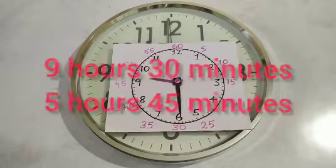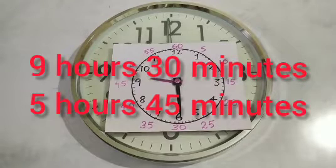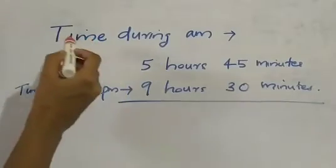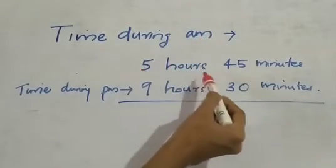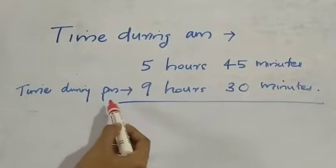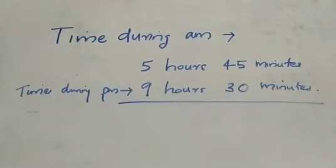So now 9 hours 30 minutes in the PM time, and 5 hours 45 minutes in the AM time. Now we want to calculate both. I wrote here: time during AM — 5 hours 45 minutes; time during PM — 9 hours 30 minutes. Now we are going to add both.